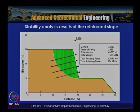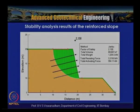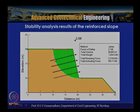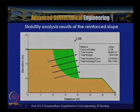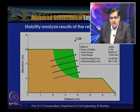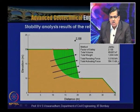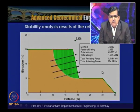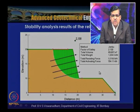Stability analysis results of the reinforced slope show nails inclined at 12 degrees, placed with 1.5-meter vertical spacing. The nail length is 9.7 meters with a 0.35-meter diameter grouted body. The resulting factor of safety is approximately 2.158, with total resisting force about 1500 kN and activating force about 700 kN.